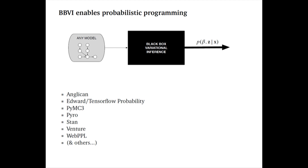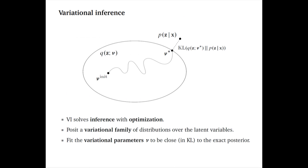This enables us to use variational inference in probabilistic programming languages. Here's a partial list of probabilistic programming languages that implement black box variational inference. Infer.NET also implements variational inference — though it's a different type of variational inference — and should be on this list too. So again, variational inference solves inference with optimization, and we want to do this generically, where we don't have to do any mathematical work beyond specifying the model.